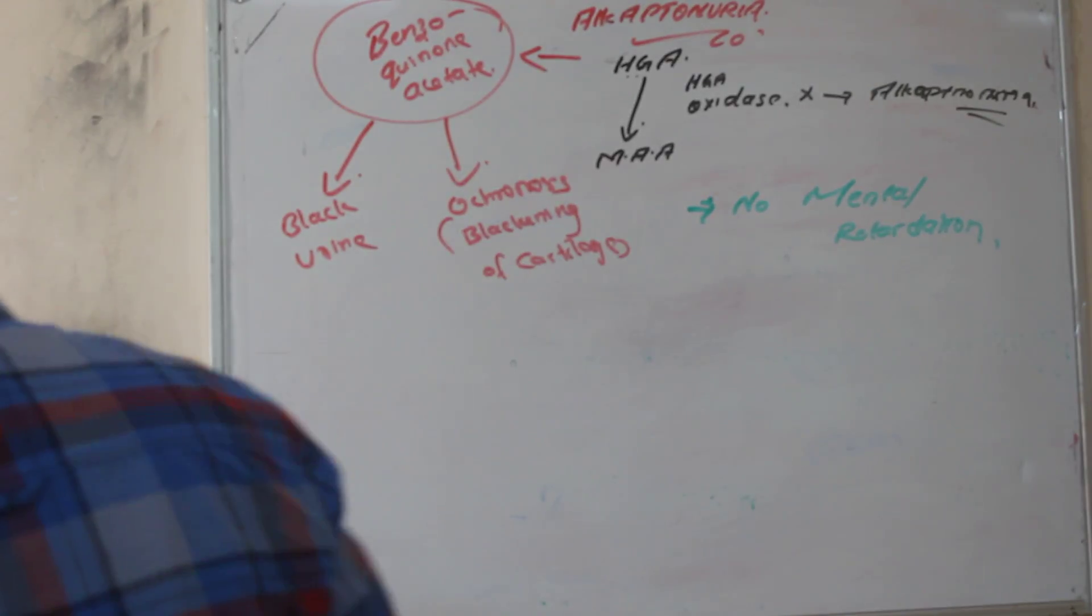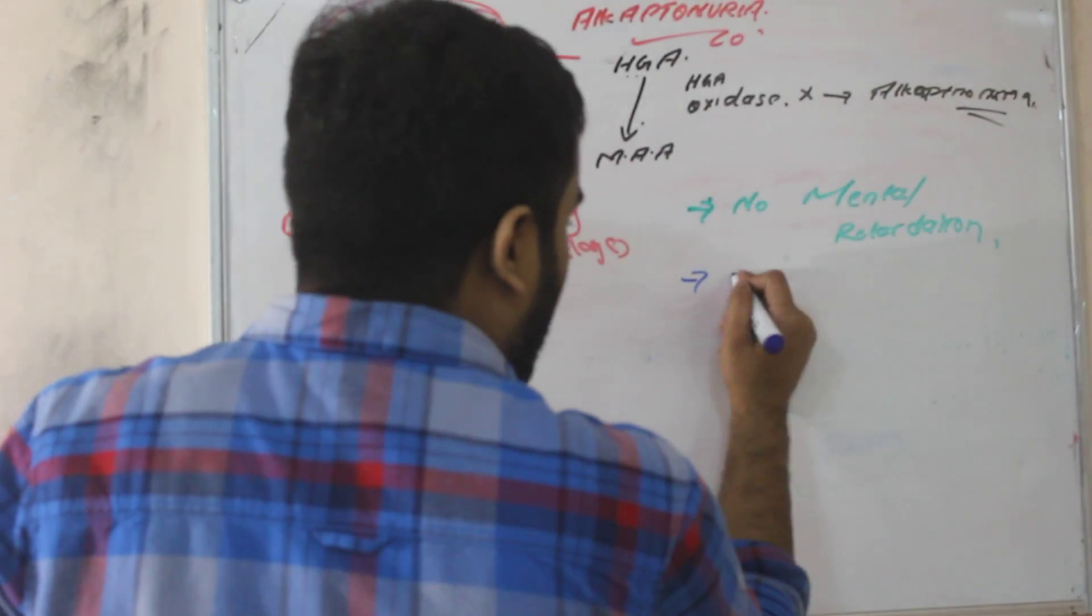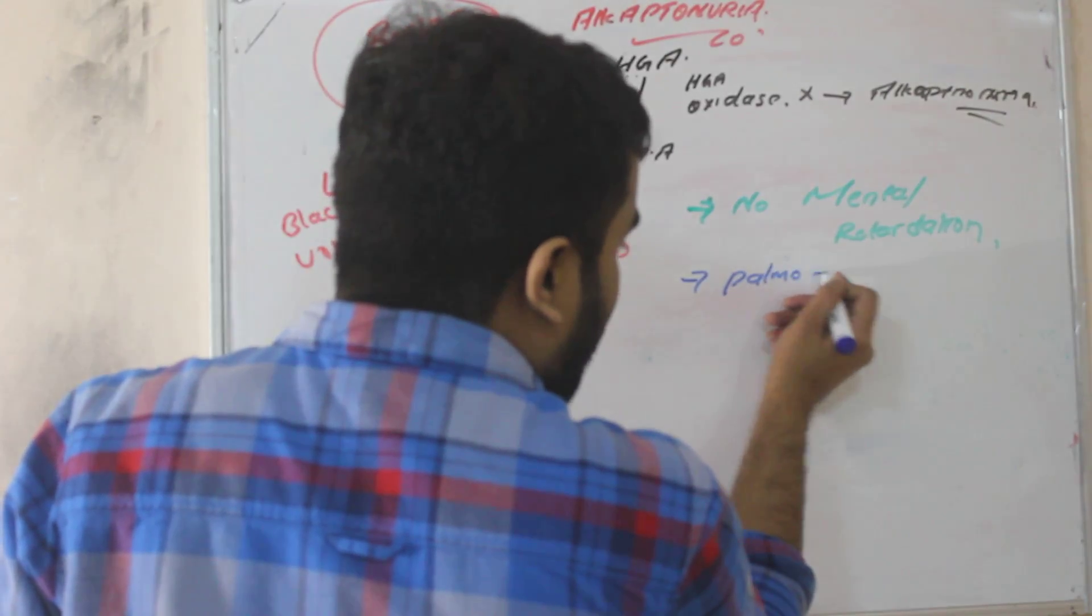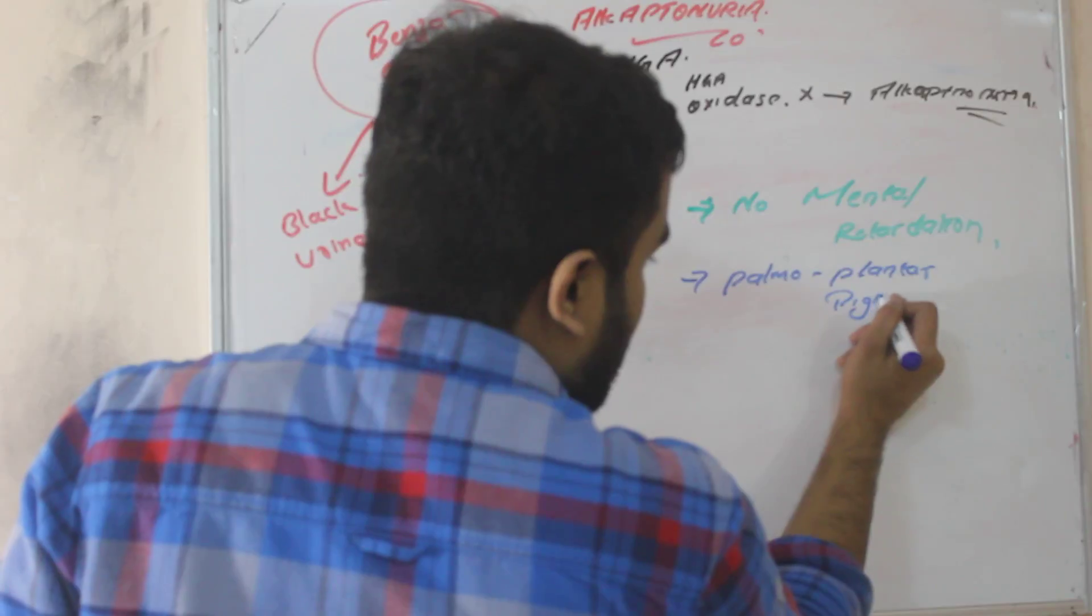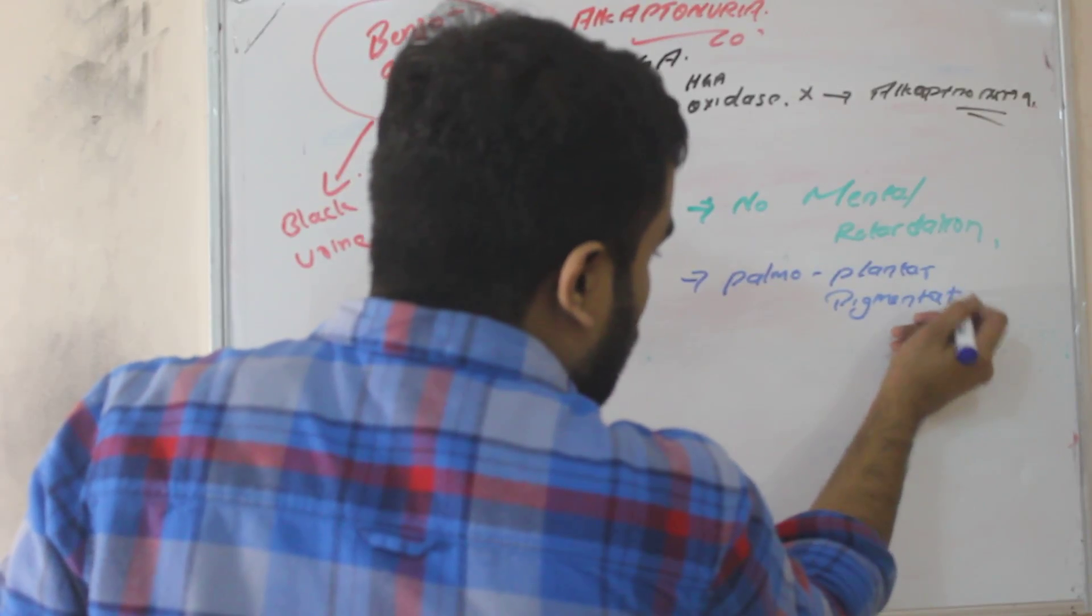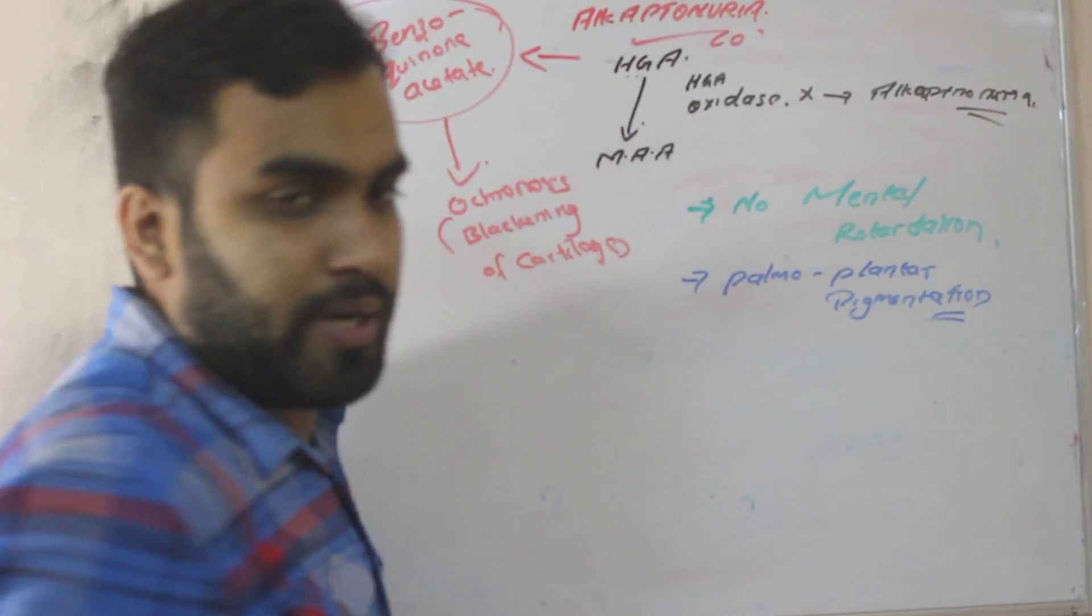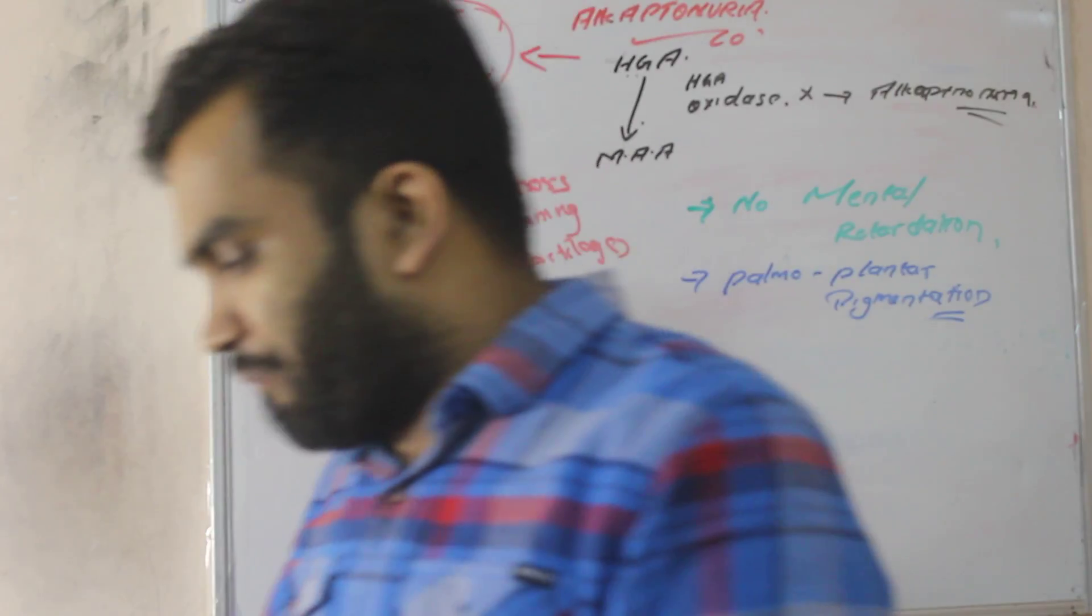Now one more thing you have to remember is there will be palmoplantar pigmentation can be seen here. So these are the two things that you have to remember. Alkaptonuria.